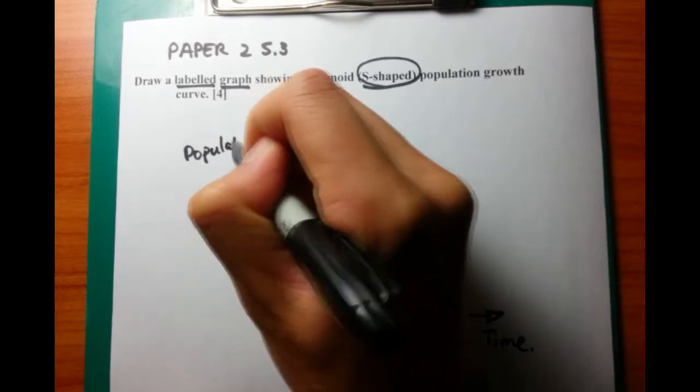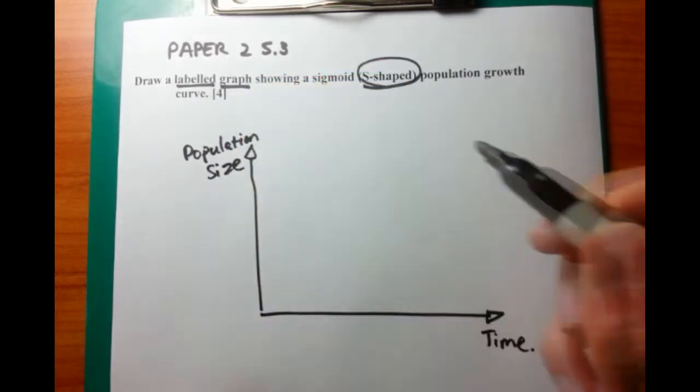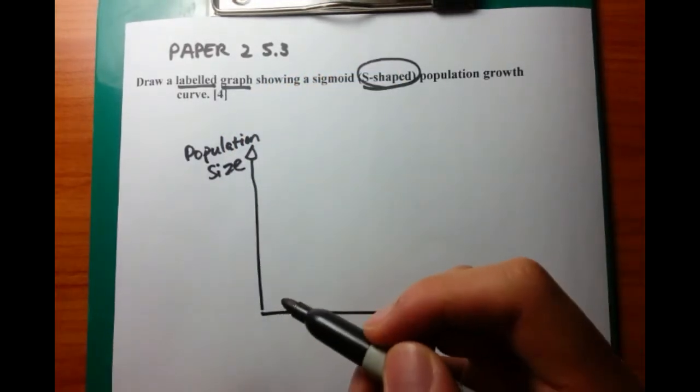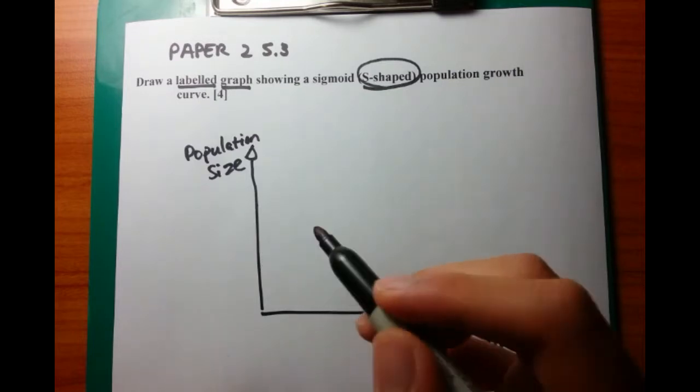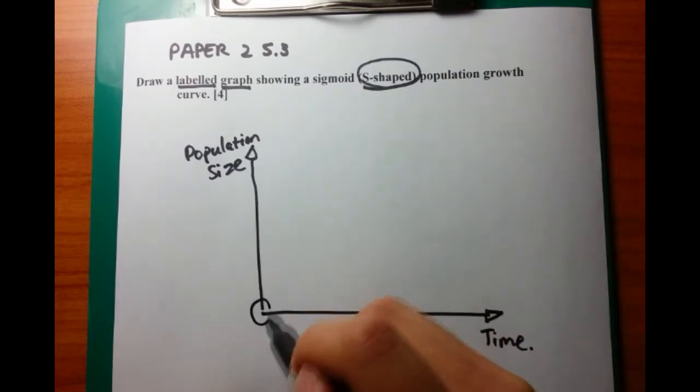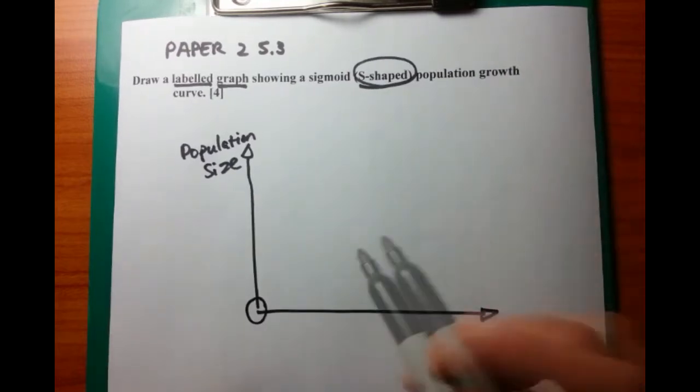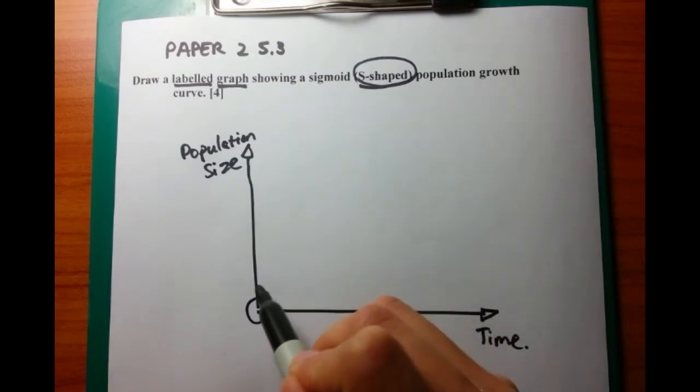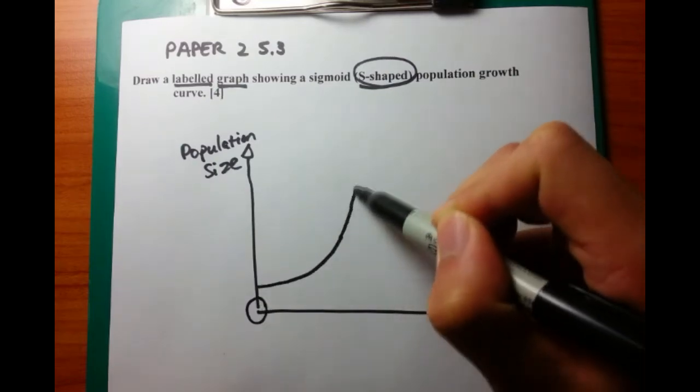And I want to make a really strong point to label the axes very carefully. On the X axis you have time, and on the Y axis you have population size. Now it's not enough to just say population, you want to say population size or population number.